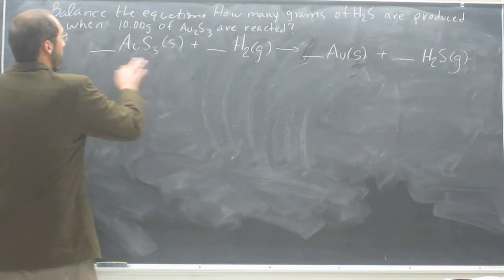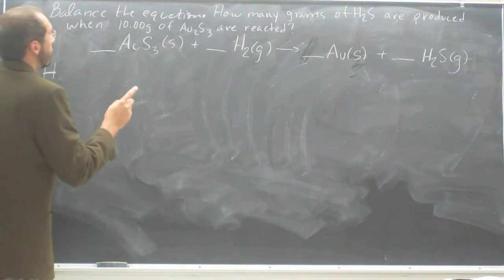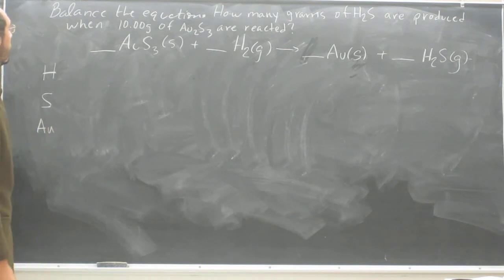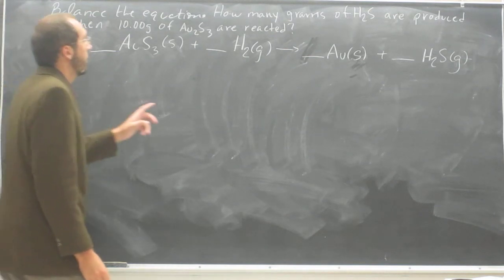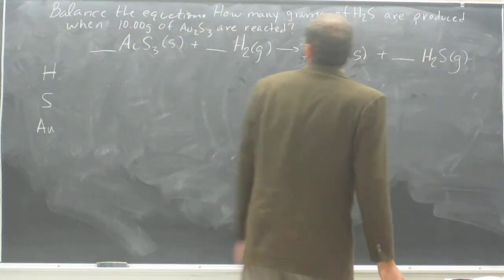We look over here, we're going to balance hydrogen, then sulfur, and then gold. So first, we say, well, we've got two hydrogens here, two hydrogens here, those are balanced.